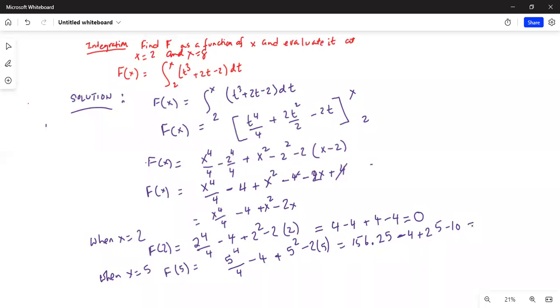This is equal to 156.25 minus 4 plus 25 minus 10, and the answer is 167.25.